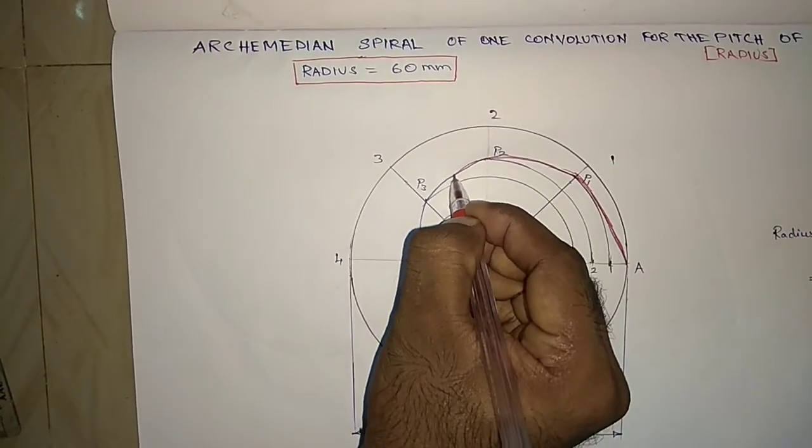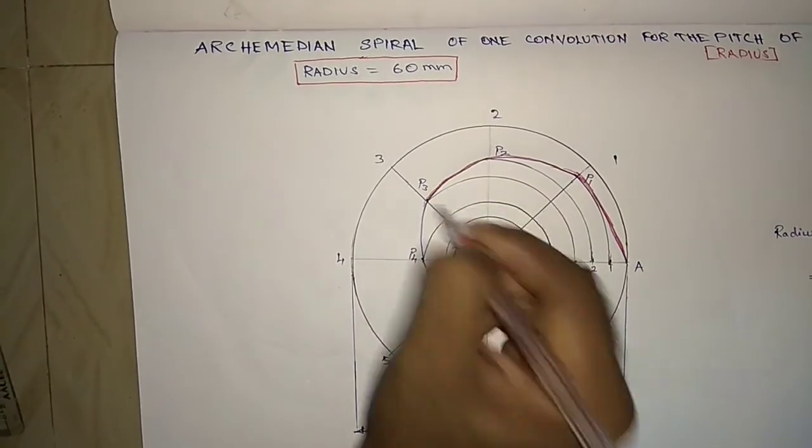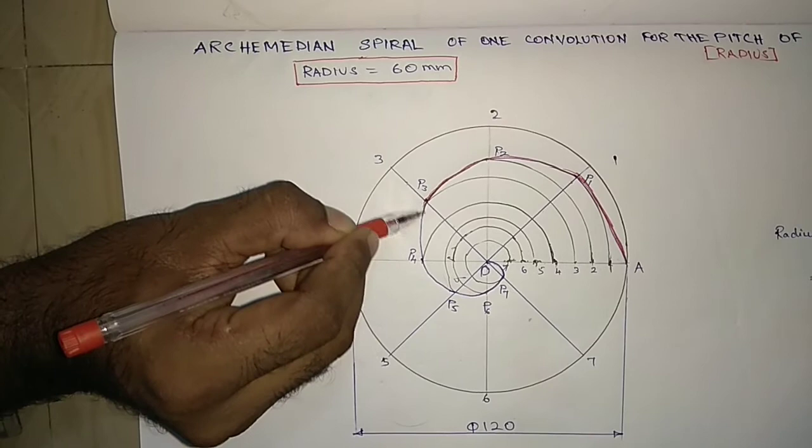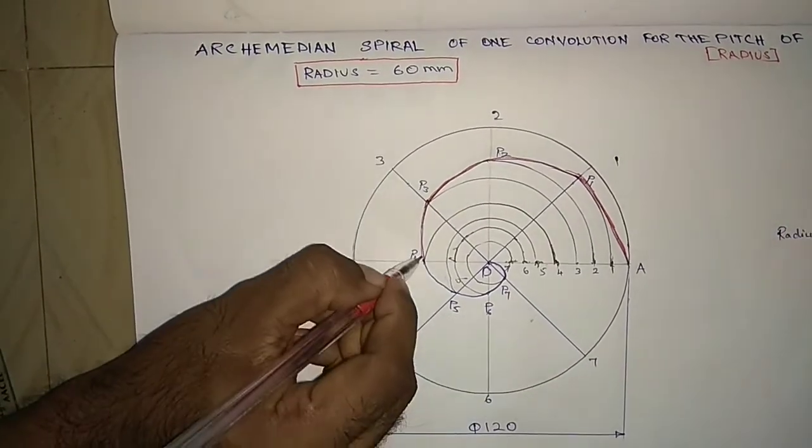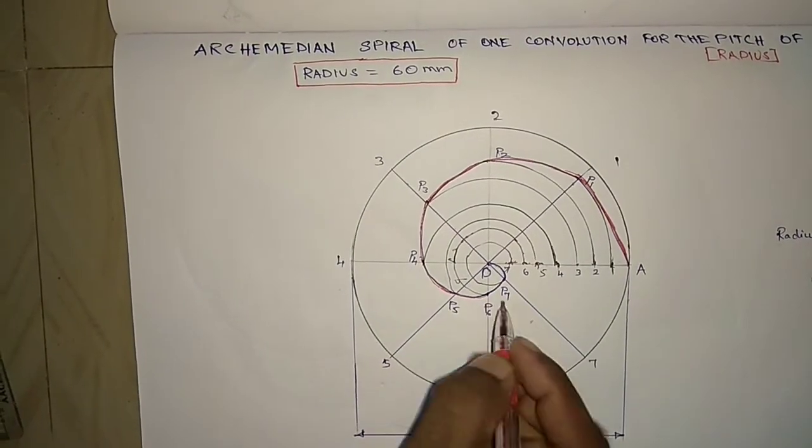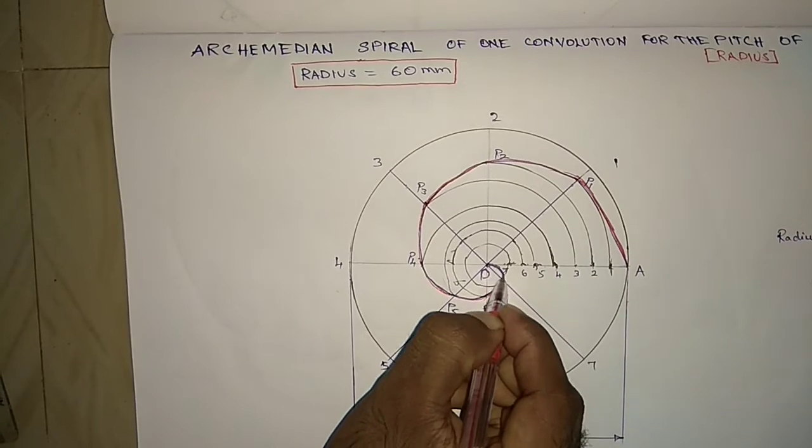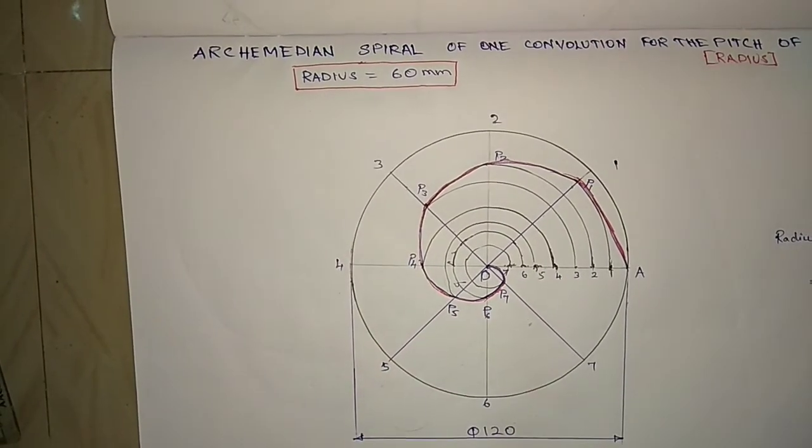For different radius values, you can do it in the same manner. First you can draw the circle. The circle was divided by 8 equal segments. Then the radius also divided by 8 equal segments. Then each point you can make an arc up to the respective lines.